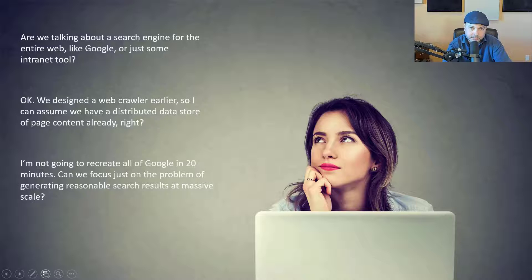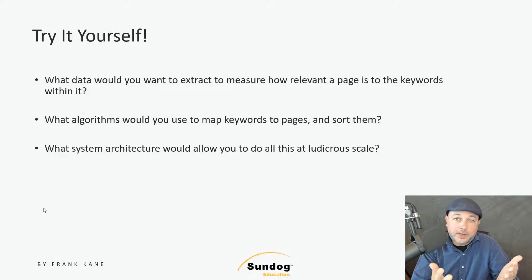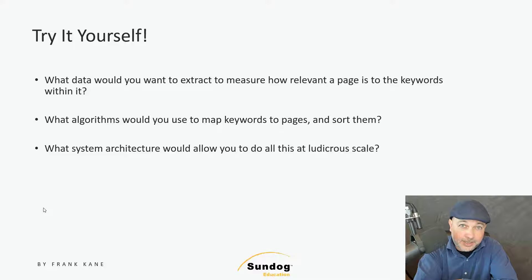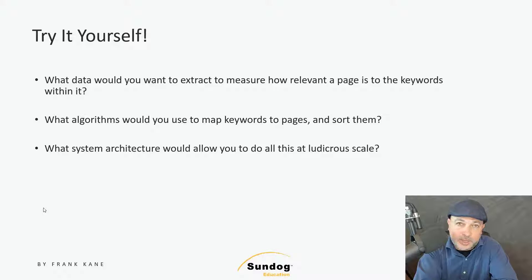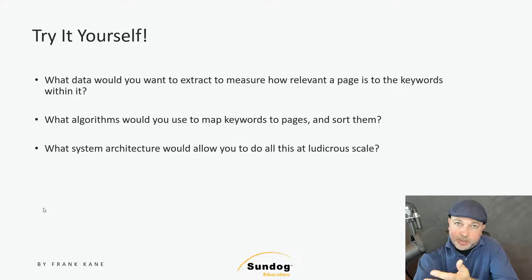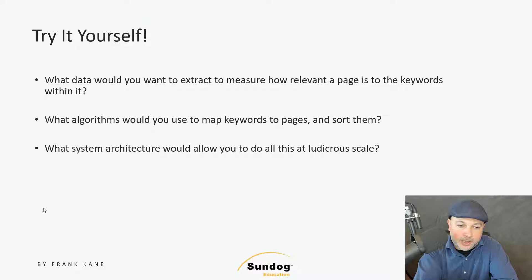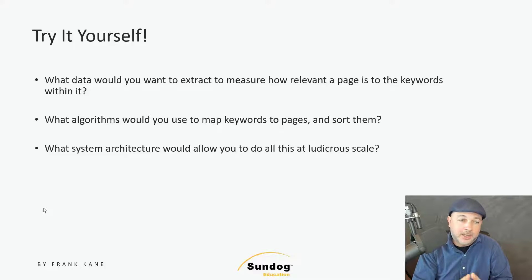Let's talk about some algorithms you might employ and an architecture to apply them at scale. We've been asked to design Google here, basically — tall order. Some very smart people at Stanford did this a long time ago. Just break it down into components. What data would you want to extract to measure how relevant a page is to keywords within it, doing that at massive scale? Things like TF-IDF don't really scale that well, so you might need to think about something more creative. What algorithms might you use to map keywords to pages and how to sort and rank them? What system architecture would allow you to do all this at a ludicrous scale? This is a tough one, so have a crack at it.